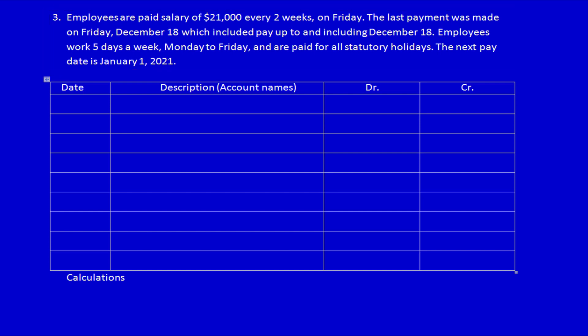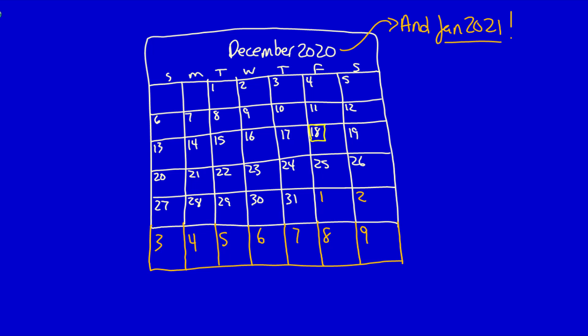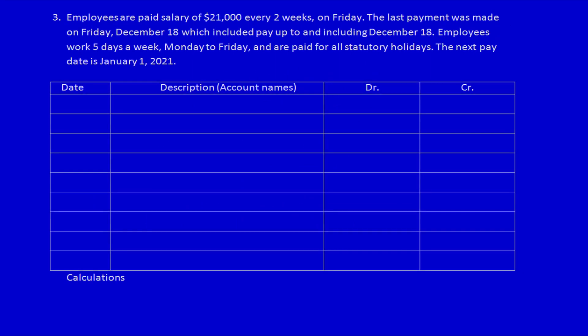Whenever we're working on any kind of salary question, we want to draw a calendar — this simply helps us understand exactly what dates we have to pay attention to. We know the last time they were paid was the 18th and the next time they're going to be paid is the 1st. We're standing at December 31st. We have to look over our shoulder and determine how many days the employees have worked for us — how many days we've consumed their services to help generate revenue. That would be the 21st, 22nd, 23rd, 24th, 25th, 28th, 29th, 30th, and the 31st. We can't include January 1st because we're doing our adjusting entries at December 31st, so we're only including the days we owe employees for in this current period. If we count, that is nine days.